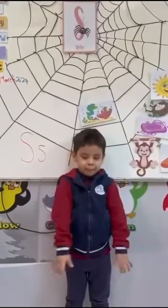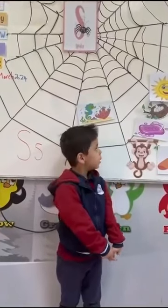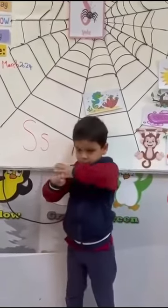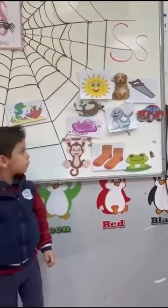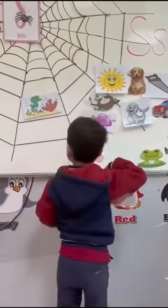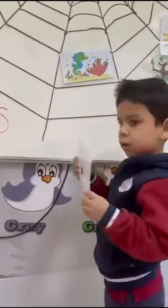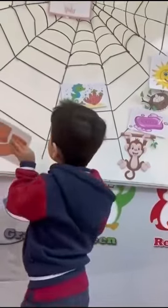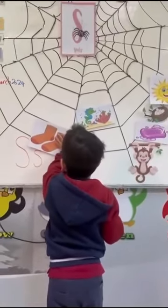Hi Mishael. What is this letter? What is this letter? S. Choose one card to start with letter S. Sox. Again, Mishael, what is this? Sox. Sox. Yes! Yalla, put it on the way. Super!